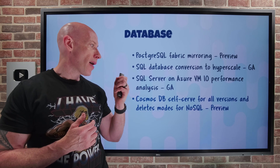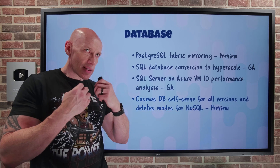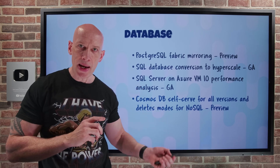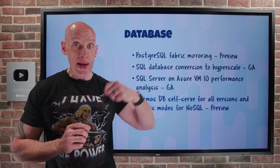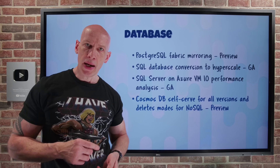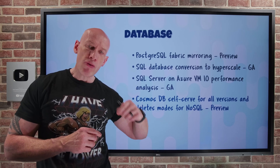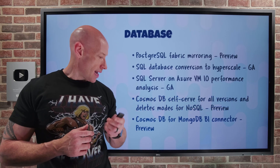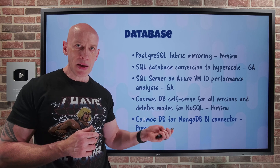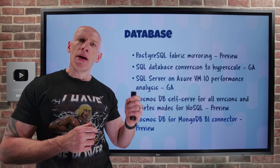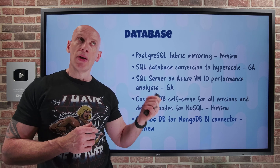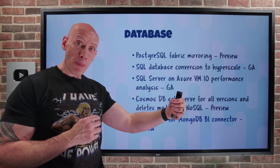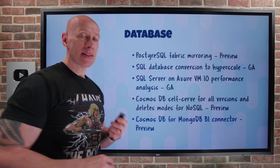For Cosmos DB NoSQL, you can now self-serve enable the all-versions-and-deletes change feed. That's only for NoSQL accounts — you need to enable continuous backups on the account, and then through the features blade you can enable the change feed, giving you a record of every change to the items in those accounts. And for Cosmos DB for MongoDB, the vCore-based option, you can now very easily connect Power BI to it using direct query mode, allowing interaction with live data.